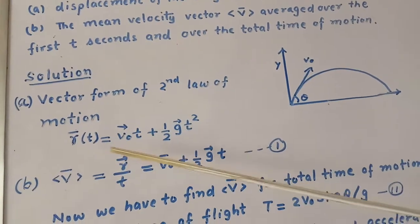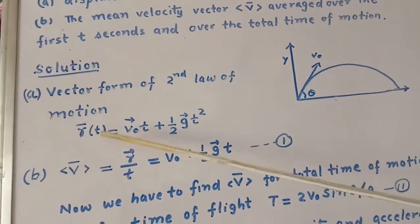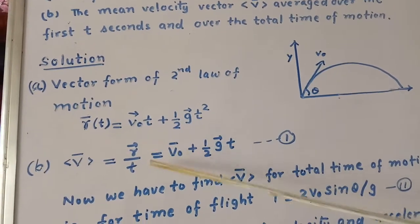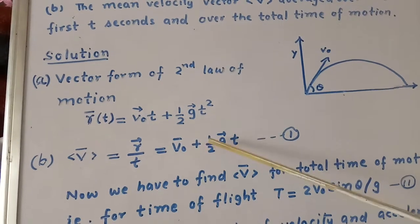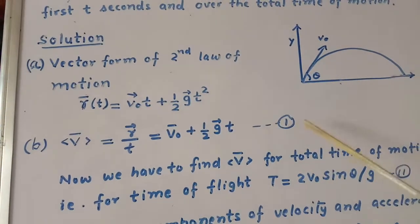We find average velocity for time T by dividing this equation by T. We get vector R divided by T, which comes to V0 plus half G T. This is equation number 1.